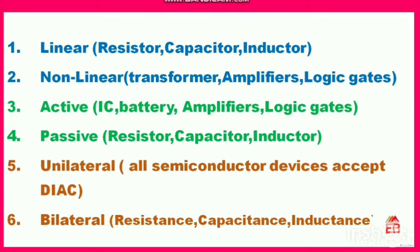Next is bilateral. Bilateral elements are those in which the flow of current is bidirectional — it can flow clockwise as well as anticlockwise. Examples of bilateral elements are resistors, capacitors, and inductors, in which the current may flow from either direction. These are the basic definitions we need before going to the MCQs on theorems.